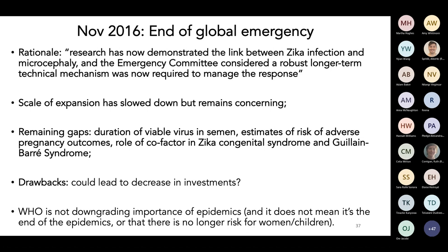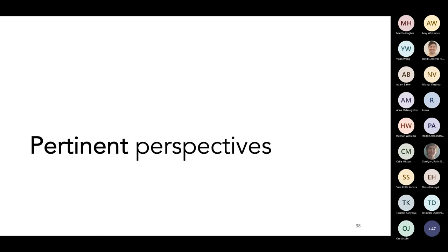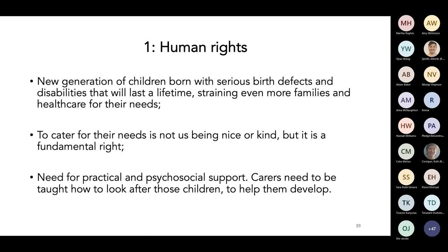Some pertinent perspectives that go a bit beyond. Now let's think about all these affected children. First, human rights: we have a new generation of children born with serious birth defects and disabilities that will last a lifetime, putting strain on families in the very deprived northeast of Brazil. We need to cater for their needs — it's an obligation of the state and proper support must be put in place. And of course, this has not happened.